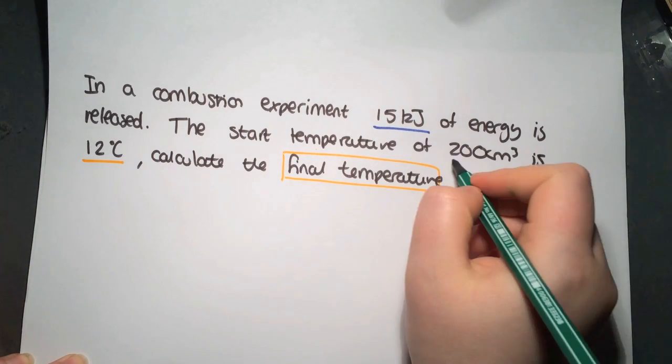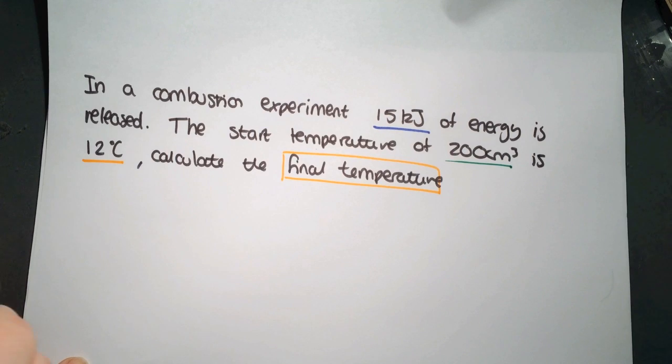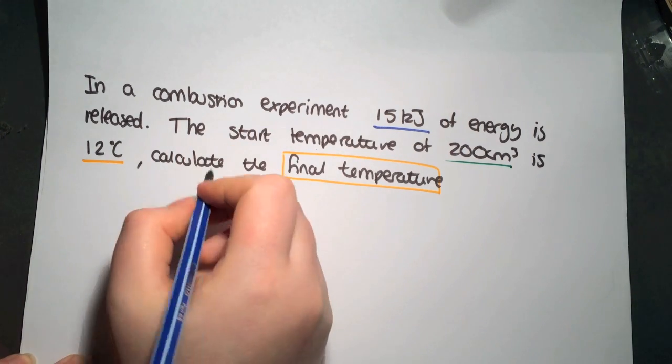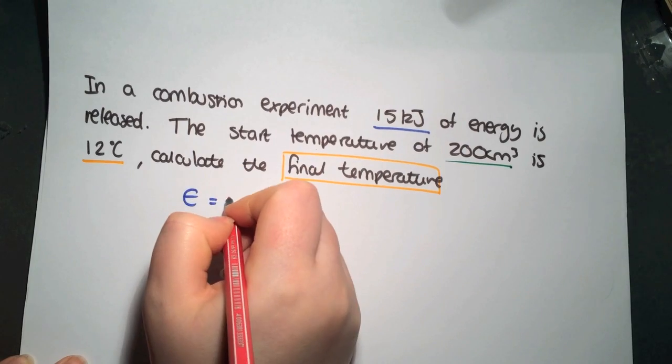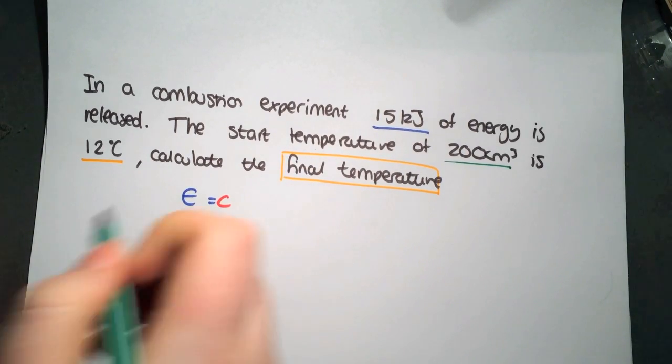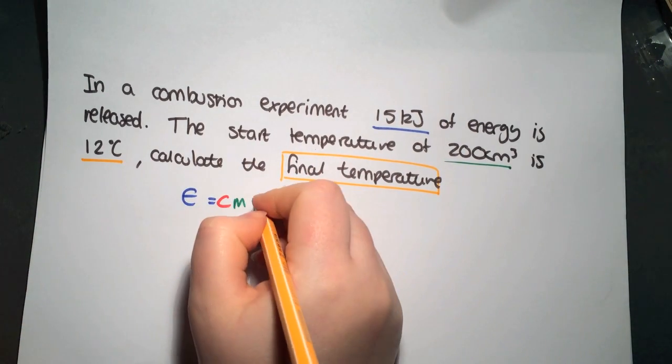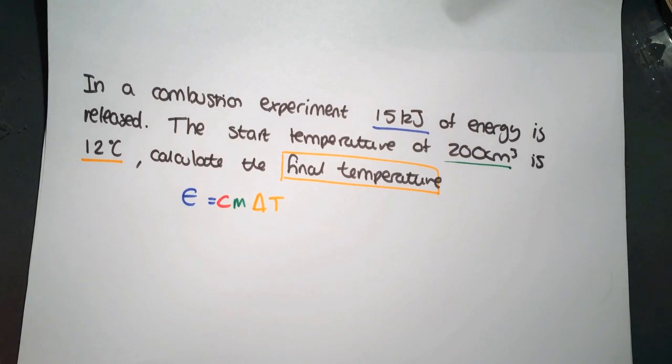Again, we've been given a volume of water, which we'll have to change into the mass. So for our equation, as we always do, so E equals C M delta T. So at the side.